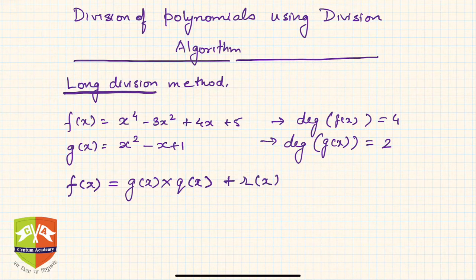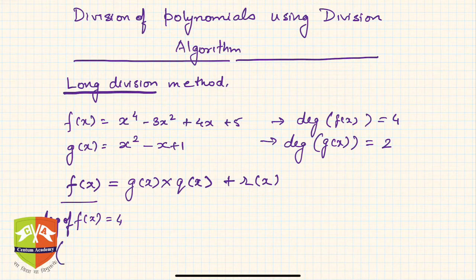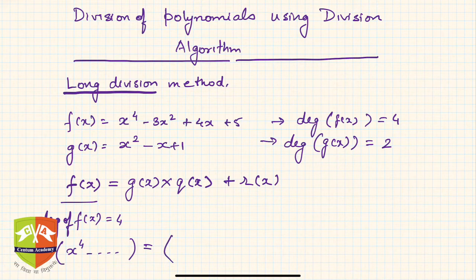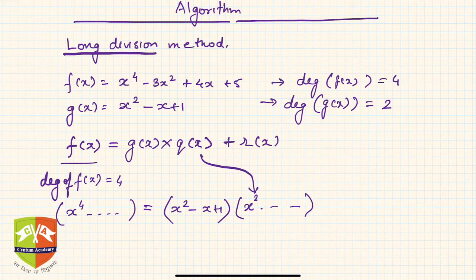The degree of f(x) is 4 and the degree of g(x) is 2, which means q(x) must also have a degree of 2. Think about it: f(x) has x⁴ as its first term, and g(x) starts with x². So in q(x), I must have a power of x² such that when I multiply g(x) × q(x), I get x² × x² = x⁴.